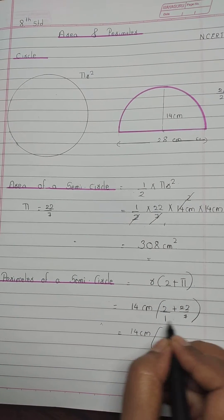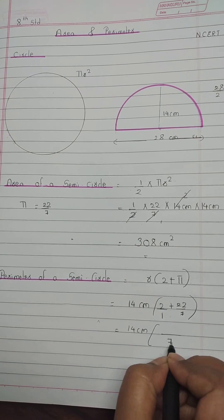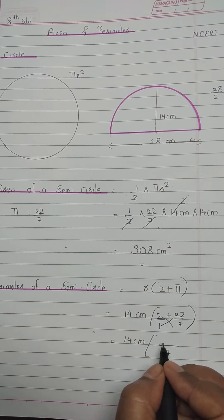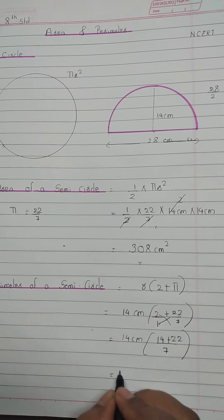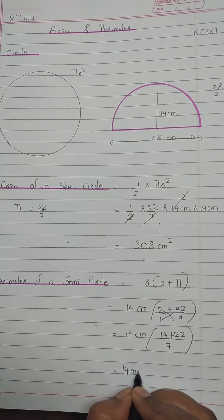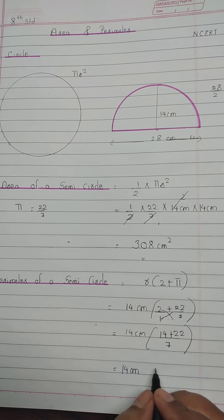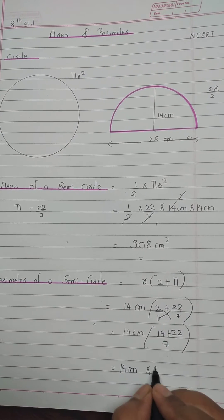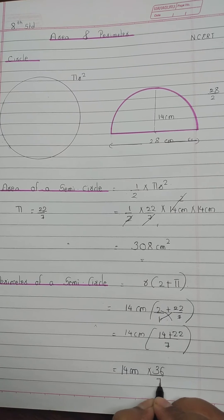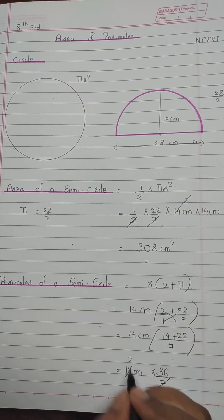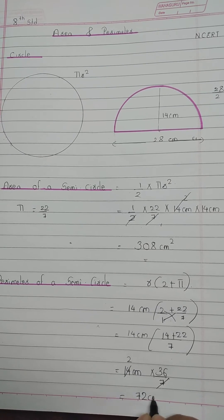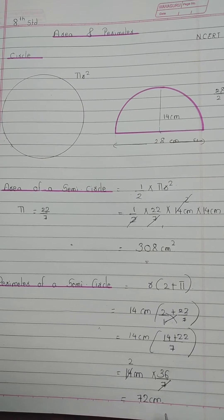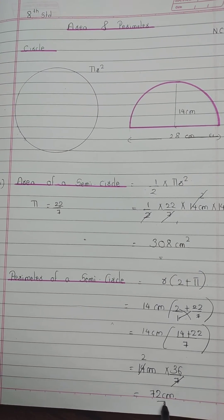LCM of 7 and 1 is 7. Now cross multiply it. It comes to 72 cm. Perimeter of a semicircle is 72 cm.